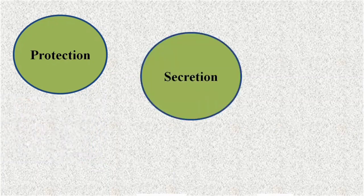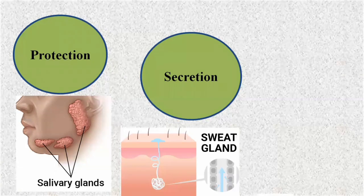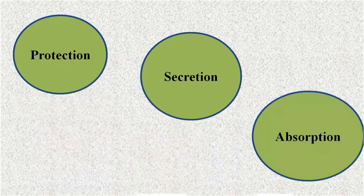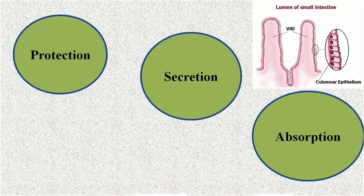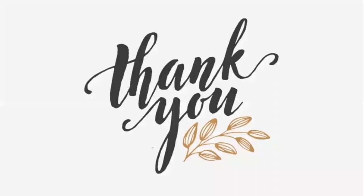Other functions of epithelial tissue include secretion and absorption. Regarding secretion, epithelial tissues form the lining of glands such as sweat glands and salivary glands, which are responsible for secreting different substances including mucous secretions. For absorption, simple columnar epithelium lines the small intestine and forms microvilli, which provide a large surface area for the absorption of different nutrients from the small intestine.